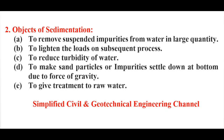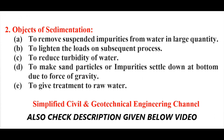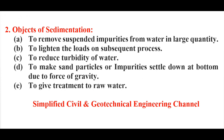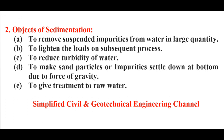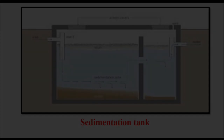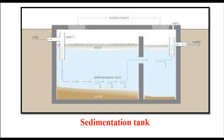Now we will see the objectives of sedimentation. Point A: to remove suspended impurities from water in large quantity. Point B: to lighten the loads on subsequent processes. Point C: to reduce the turbidity of water. Point D: to make sand particles or impurities settle down at the bottom due to force of gravity. Point E: to give treatment to raw water. These are a few examples of sedimentation tanks.